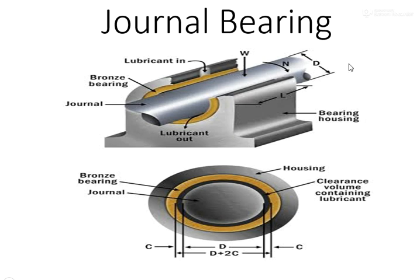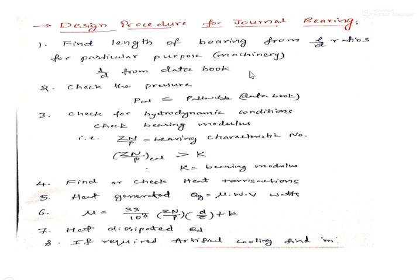The load is acting on the journal. R is the shaft diameter, N is the RPM, and L is the length of the bearing. The first design step is to find the length of the bearing from L/D ratios, where L is bearing length and D is the journal/shaft diameter, which is generally given. From the D value and L/D ratio from the data book, we find the length.